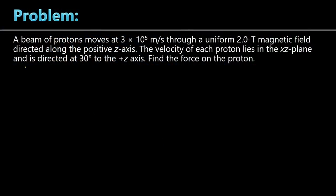Problem number one. A beam of protons moves at 3 times 10 to the 5 meters per second through a uniform 2 Tesla magnetic field directed along the positive Z axis. The velocity of each proton lies in the XZ plane and is directed at 30 degrees to the positive Z axis. Find the force on the proton.